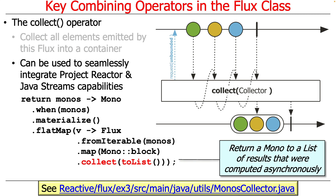You can use collect for all kinds of different purposes. Here's an example of using it to seamlessly integrate Project Reactor and Java Streams. We're taking a bunch of monos, which are asynchronous operations that could run in parallel in the background. We materialize them, use flat map, block on them — by this point they've already finished — converting them from a mono to the actual type, and then collecting the results into a list. This returns a mono to a list of all the operations that were run asynchronously, which is very similar to the non-blocking concurrent collectors discussed in the context of parallel streams.